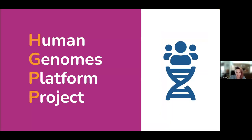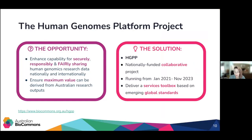Moving on to the HGPP: it is a large collaborative project that brings together leading genomics research organisations and infrastructure providers around the country to investigate and implement global standards and technologies in Australia and improve the overall state of human genomics data sharing. It's jointly funded by the Australian Research Data Commons, Bioplatforms Australia, and contributions from all of our partner organisations. It started in early 2021 and goes until the end of this year, and ultimately what we want to deliver is a services toolbox based on emerging global standards.